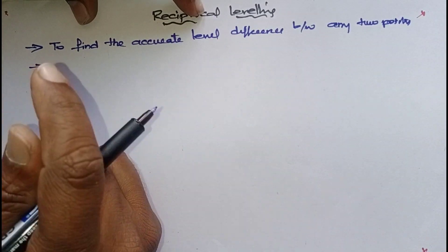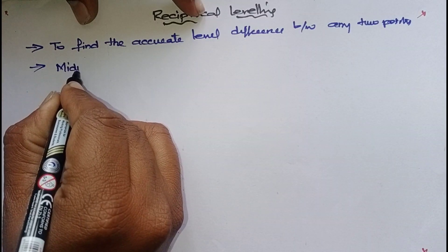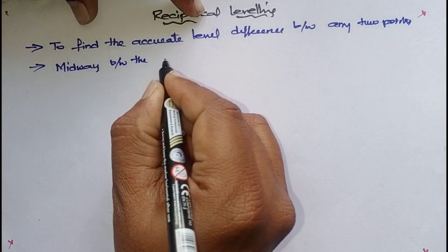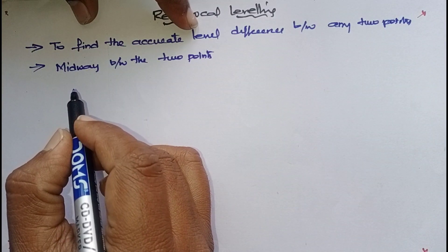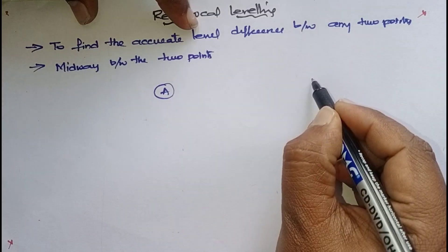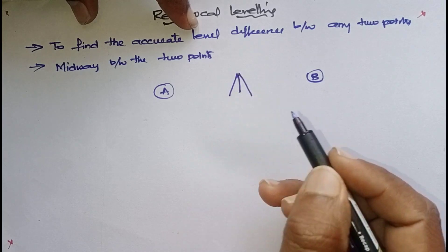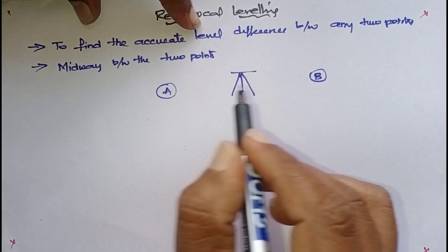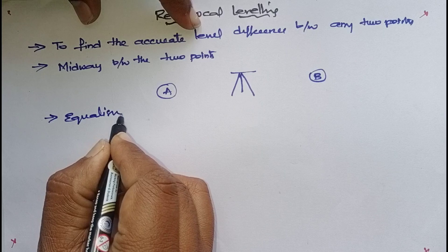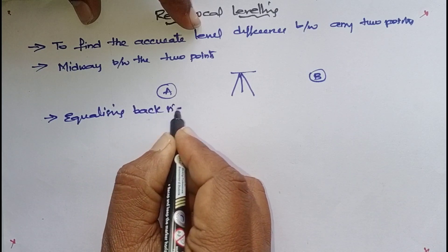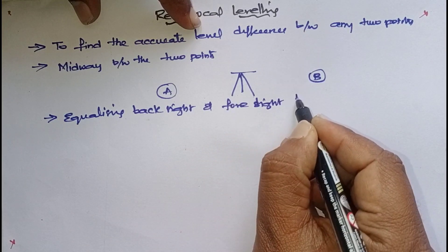In general, to find the accurate level difference between two points, we are supposed to fix the instrument midway between the two points. For example, point A is here, point B is here - to know the levelling difference, I need to fix the instrument in the middle. This concept is called equalising backsight and foresight distance.